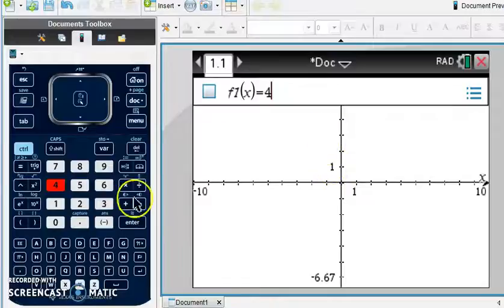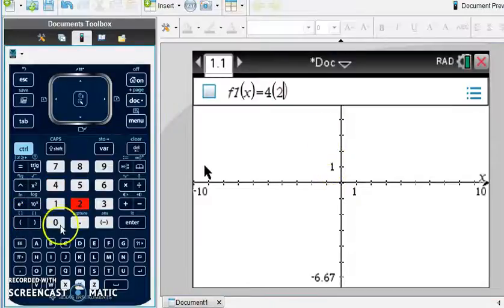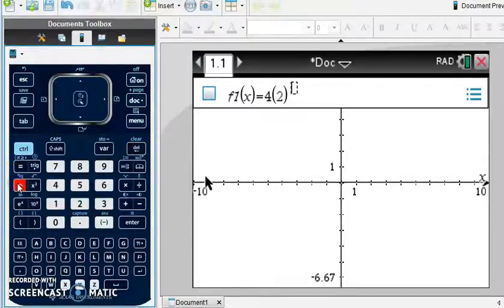So I'll type in 4, parentheses 2, close parentheses, and then I need to do my x as an exponent, so make sure you don't do the x directly after. That's going to be a different function and not exponential. You need to use this little button, called a caret button, and it brings you up into the exponent spot, and you can type in x.